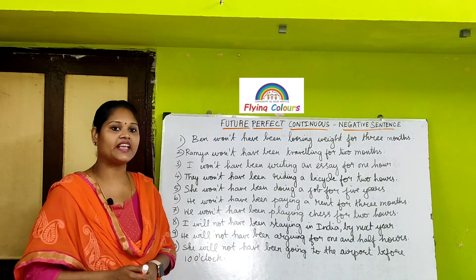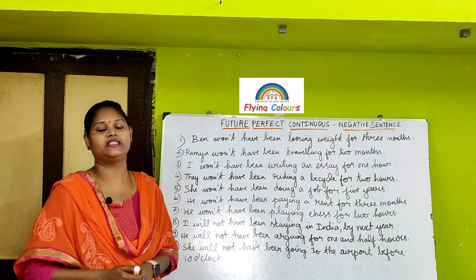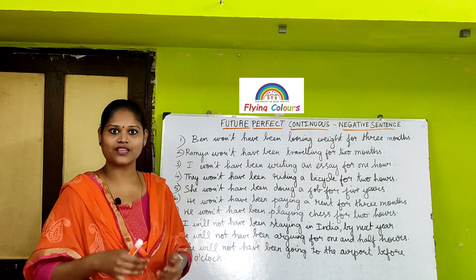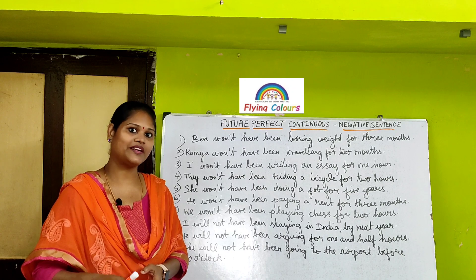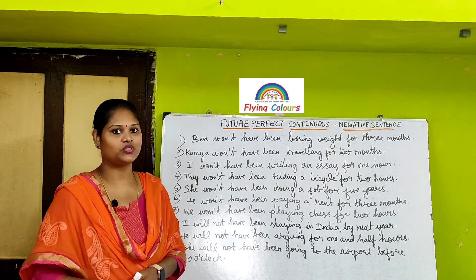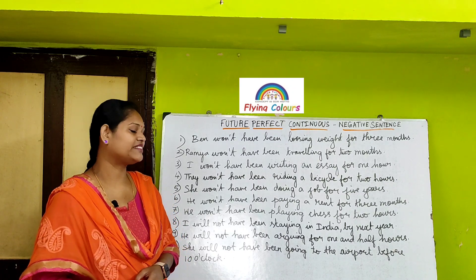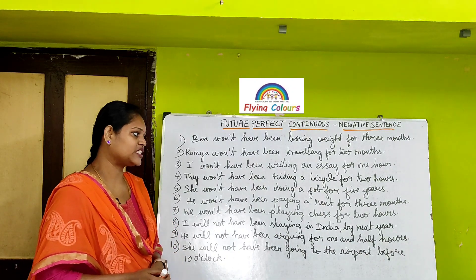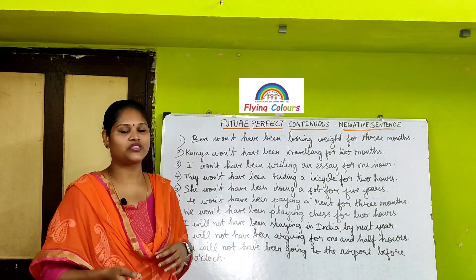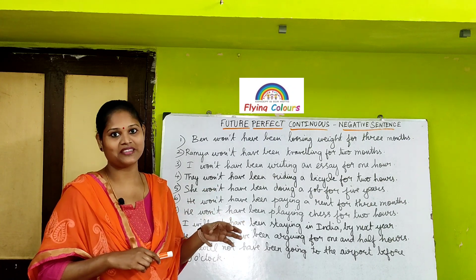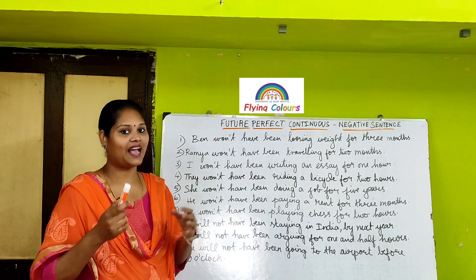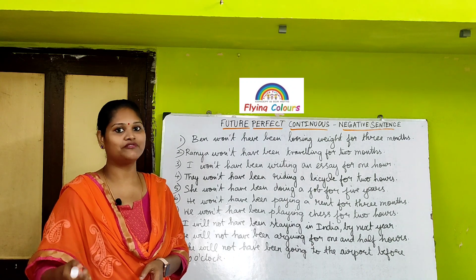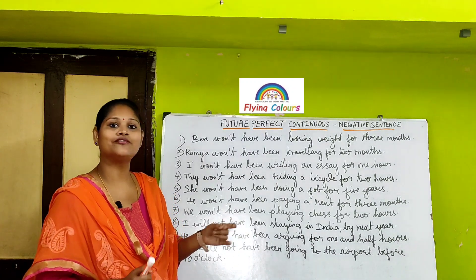He won't have been paying rent for three months. That particular person has started paying the rent and it is continuing in the present too, but won't continue in the future. The duration is three months. He won't have been playing chess for two hours — the playing action started in the past and continues in the present but won't continue in the future for the duration of two hours.